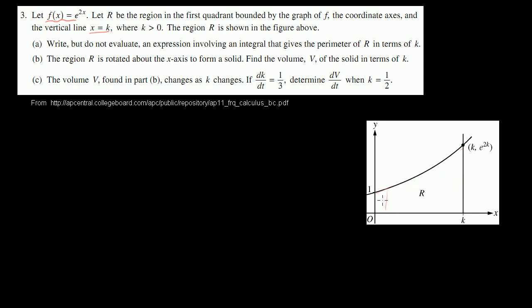All right, so what are they asking us to do? So k is greater than 0. The region R is shown in the figure above. Part a: Write but do not evaluate an expression involving an integral that gives the perimeter of R in terms of k. So for the perimeter of R, we're going to have to find the length of the sides of R. And the hardest of these is to find the length of the actual curve between this point and this point right over here.